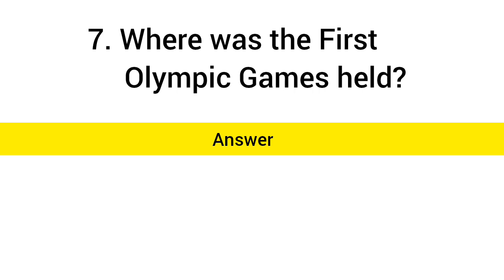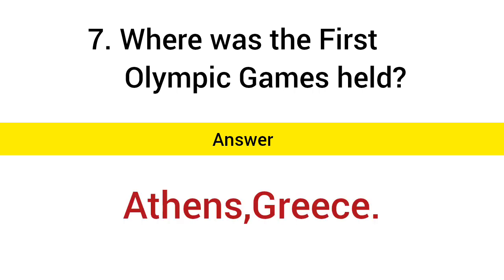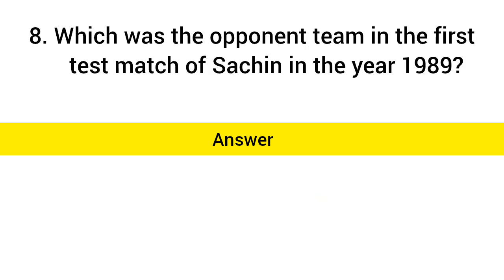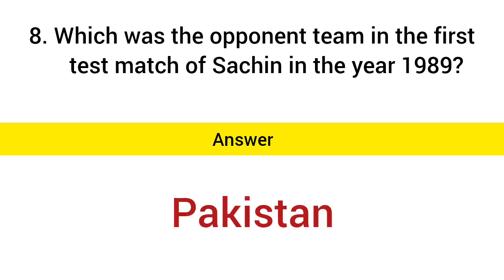What is the percentage of nitrogen in the air? Answer: 78 percent. Where were the first Olympic Games held? Answer: Athens, Greece. Which was the opponent team in Sachin's first Test match in 1989? Answer: Pakistan.